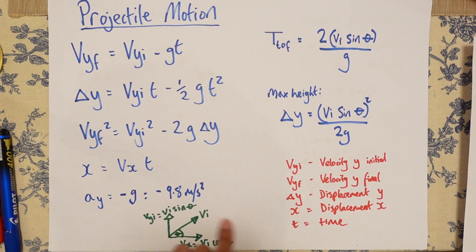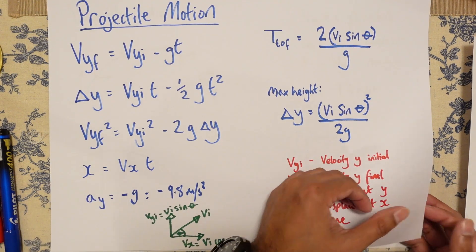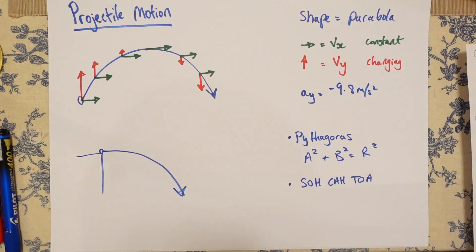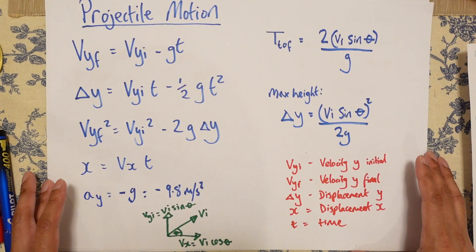AY is minus G, which is 9.8 meters per second. And again, you need to know Pythagoras theorem, you need to know SOHCAHTOA. You need to know what this means before we tackle this super difficult question.